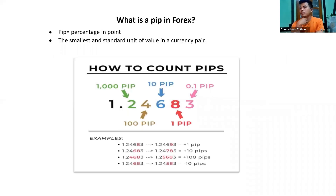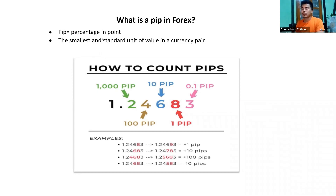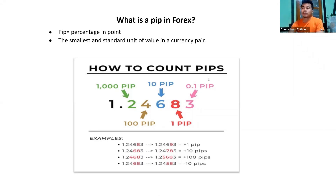Next, let's understand pips. Pips — the full form is Percentage In Point, also known as Price Interest Point. Pips are how we measure price movement in forex. I will show how to calculate pips later.